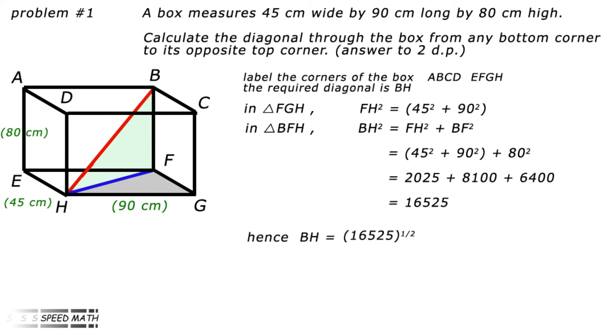Hence, BH equals the square root of 16,525 which equals 128.5496. So our answer is the diagonal through the box equals 128.55 centimetres to two decimal places.